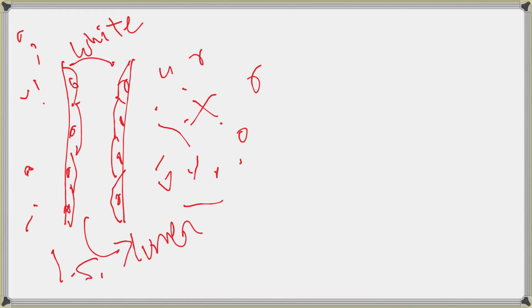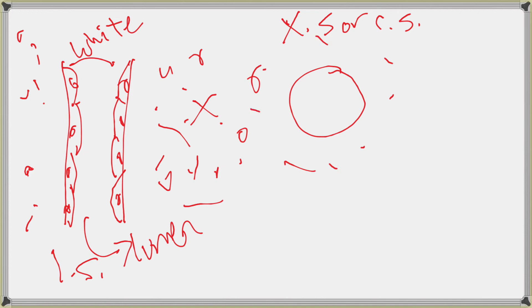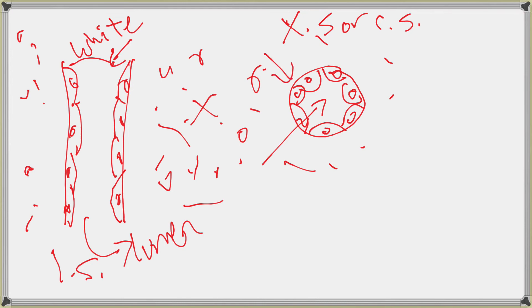If I got a cross section — labeled x.s. or c.s. — of the same blood vessel, what you'd get is a circle on the slide, with distracting tissue all around it. You'd locate the tissue of interest by finding what lines the bright white circular lumen. The longitudinal section and the cross section show the same tissue, just approached from two different orientations.